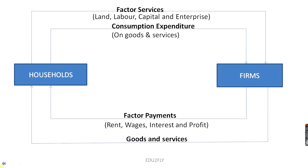Looking at the diagram, the upper loop shows the real flow — that is, the flow of factor services from household to the firms and the corresponding flow of goods and services from firms to the household. The inner loop shows the money flow — the flow of factor payments from firms to households and the corresponding flow of consumption expenditure from households to the firm.